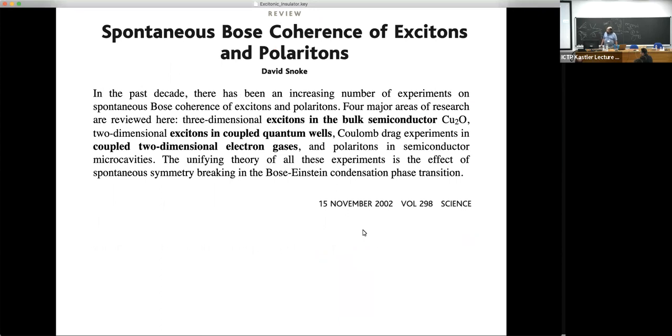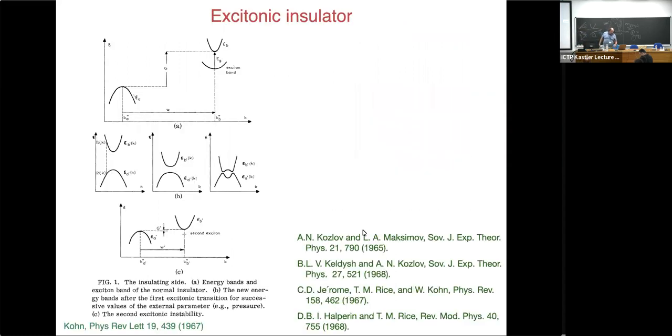This subject has a very long history. People tried to create excitonic condensate for a long time. The most successful attempts were in devices, coupled 2D electron gases, and quantum well structures. But more recently, the story goes back about 60 years, where Kohn, Keldysh, Halperin, Rice, et cetera, proposed that there is an instability. A metal with electron-hole interaction can turn into an insulator.